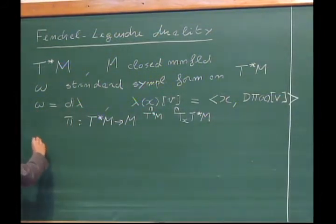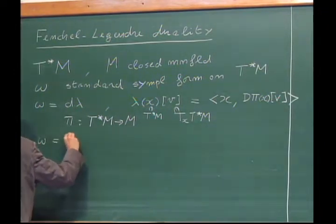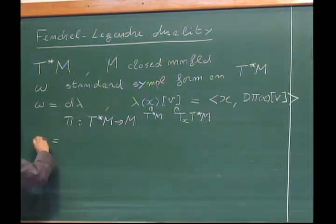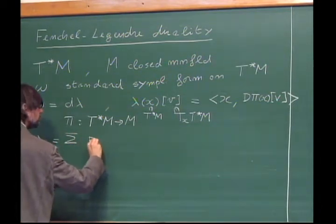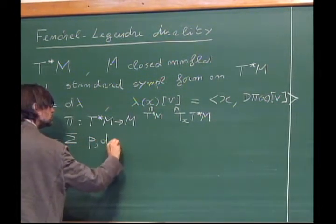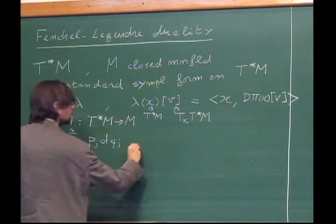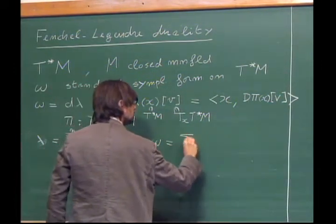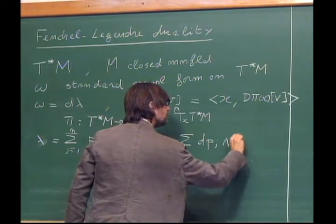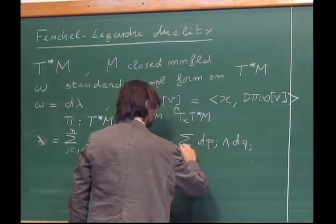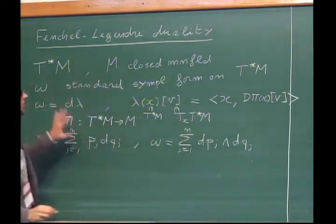This defines lambda, called the Liouville form — a primitive of our symplectic form. In local coordinates, lambda is p_j dq_j (summed j from 1 to n), and omega is dp_j wedge dq_j.